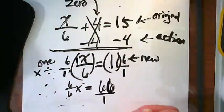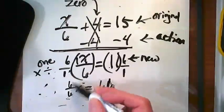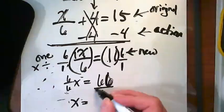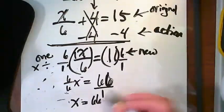So there I'm showing all of it, but now I can take care of those invisibles, right? 6 over 6 is equal to 1, so it just becomes x. And 66 over 1 is 66.